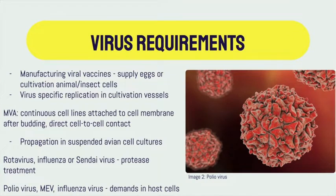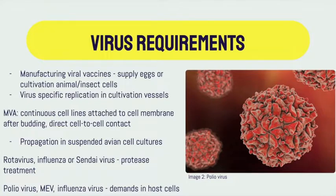To manufacture viral vaccines, the supply of eggs or cultivation of cells are involved. Then the virus is subjected to specific replication and cultivation vessels. For example, modified Vaccinia Ankara (MVA) virus in continuous cell lines remains attached to the cell membrane and requires cell-to-cell contact to spread infection. A new genotype of MVA virus propagates in a single suspended avian cell culture, facilitating the manufacturing process.